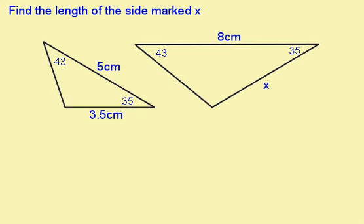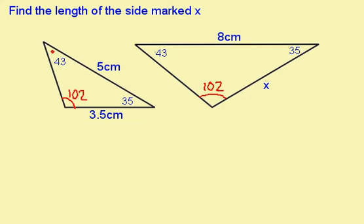This is a typical exam question. The first thing I'm going to do is prove that these two triangles are similar. I can see that this angle is the same as this, and this one is the same as this. I can now work out that this angle here is 102, and so is this one. Because I've got three angles the same in each triangle, they're similar. I now just need to find a pair of sides which are corresponding. Looking at this triangle, I've got this side with the 43 and the 35 here; the same applies to the other triangle, so this side must be corresponding. I can use these two sides to find my scale factor: 8 over 5 gives me 1.6, so to get from this triangle to this triangle, I multiply by 1.6.